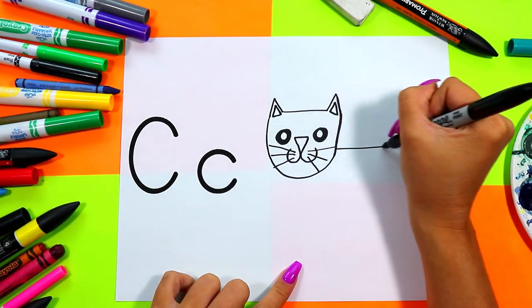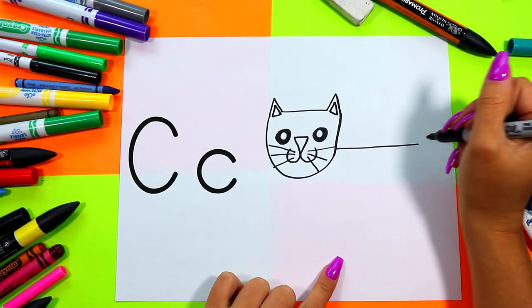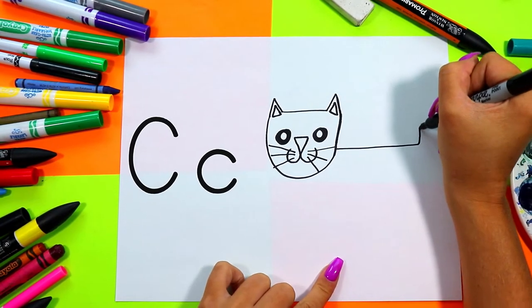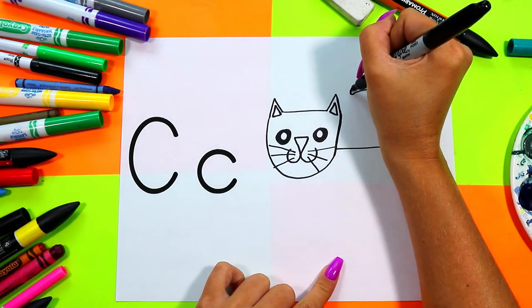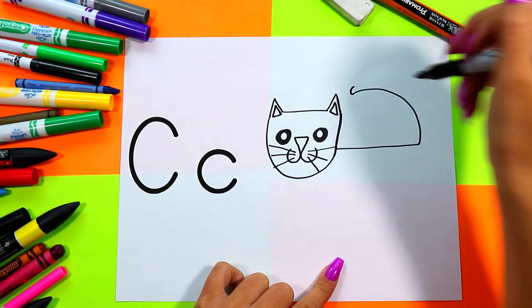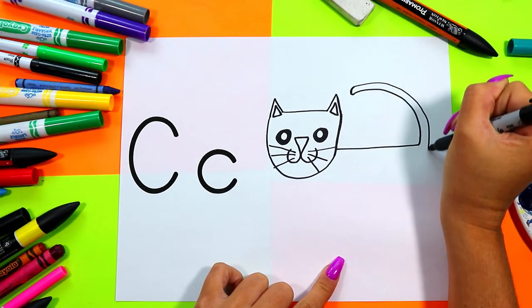Draw a straight line across out from the head to make cat's back. One curving line up to make cat's tail. We're going to curve the tip and then bring that line back down to finish cat's tail.